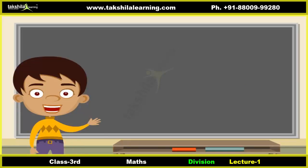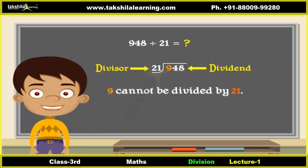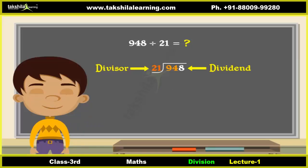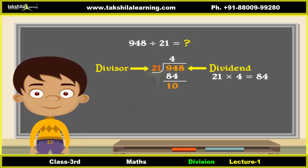Let us now learn to divide nine hundred forty-eight by a two-digit number, twenty-one. Nine hundred forty-eight is the dividend and twenty-one is the divisor. Nine cannot be divided by twenty-one, so look at the first two numbers from the left in the dividend. Divide ninety-four by twenty-one: twenty-one fours are eighty-four. Write four above ninety-four and eighty-four below. Subtract eighty-four from ninety-four and write the answer below. The next number in the dividend is eight — drag it down to make one hundred eight.